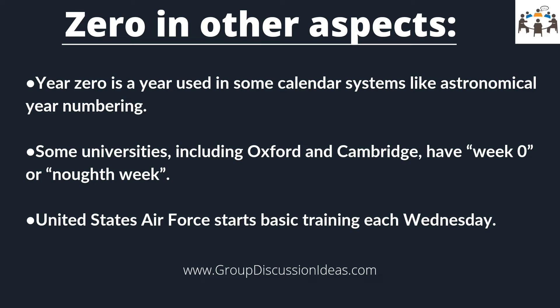Now let's see the importance of zero in other aspects. Year zero is a year used in some calendar systems like astronomical year numbering, where it coincides with the Gregorian year 1 BC. Buddhist and Hindu calendars also have the year zero concept. Some universities, including Oxford and Cambridge, have a week zero or nought week, referring to the week before the first week of lectures in a term. The United States Air Force starts basic training each Wednesday, and the first week is considered to begin with the following Sunday — the four days before that Sunday are often referred to as zero week.